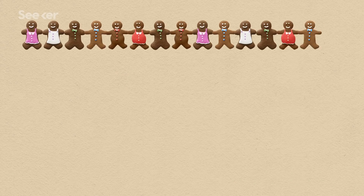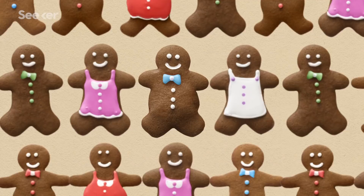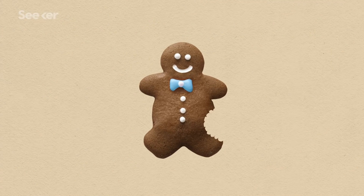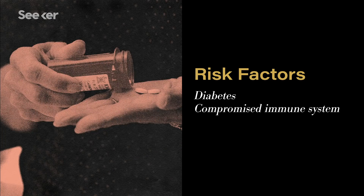While necrotizing fasciitis is still rare — fewer than about 1 in 100,000 adults will contract it — certain people are more susceptible to it. Some risk factors include diabetes and compromised immune systems. And with a mortality rate of up to about 30 percent in the U.S. and higher in developing nations, it's a dangerous disease no matter where you live.